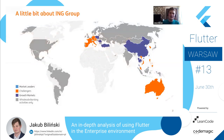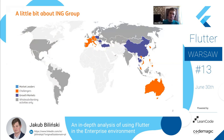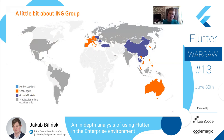But before that, a little bit about ING Group. ING is one of the largest banks in Poland — from the Netherlands to be precise. It provides banking, insurance, and asset management services, and is placed in over 50 countries. It's worth discussing how big ING Group is and how big an enterprise it is.